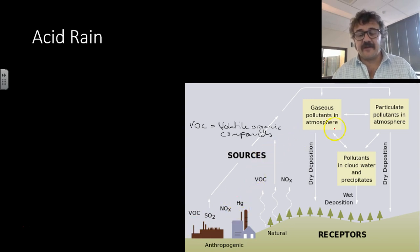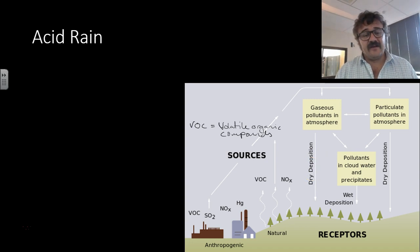So the gaseous pollutants go in the atmosphere, mix in the water and can either precipitate out or they can settle down as what we call dry deposition, which when they get wet later on is also another problem.